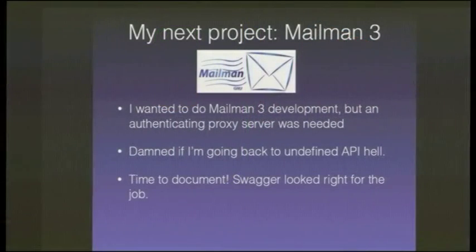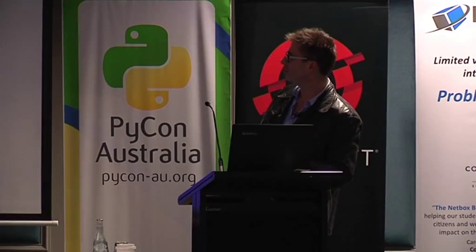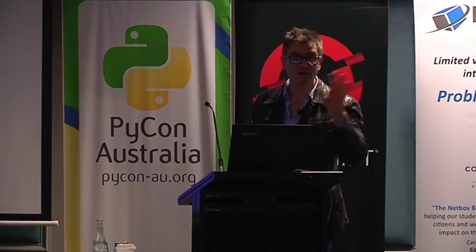When the next project came along that I wanted to work on, which was Mailman 3, I had a look at it, and Mailman 3 has a REST API at the backend, but that REST API is only intended to be used internally. It's not meant for client browsers to attach to — it's meant for other servers. So I wanted to do some client-oriented development talking to the Mailman REST API, and I thought the first thing I had to do is write an authenticating proxy server. I was damned if I was going back into the undefined API hell I had on SinglePageGuru, so I decided to document the API such that I knew exactly what was going on.